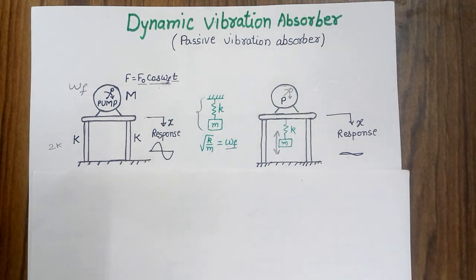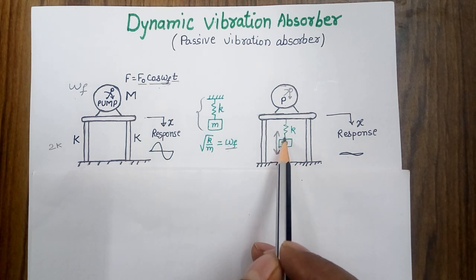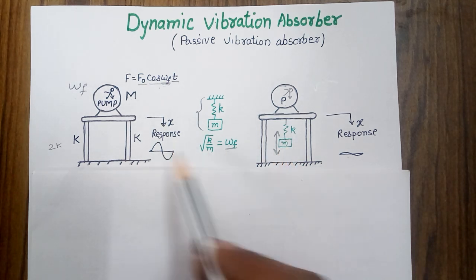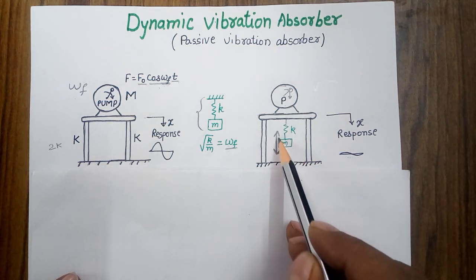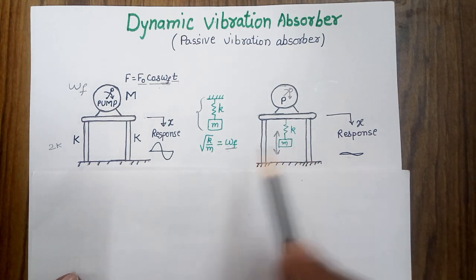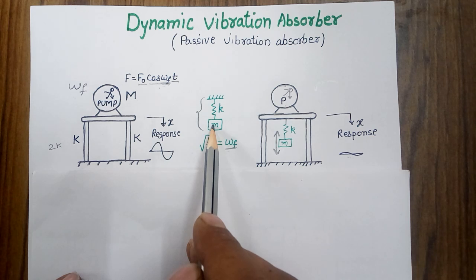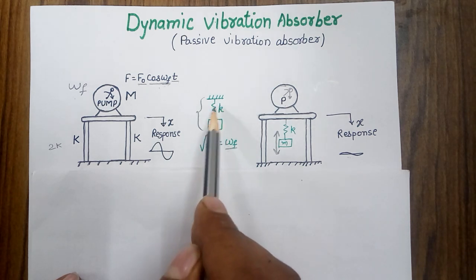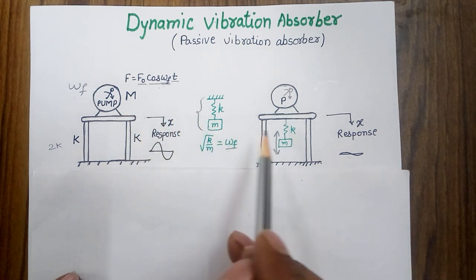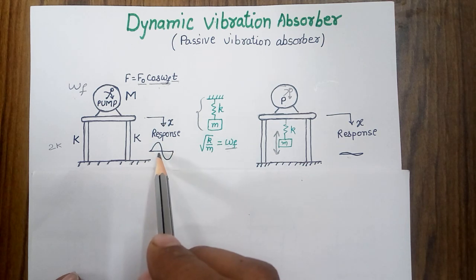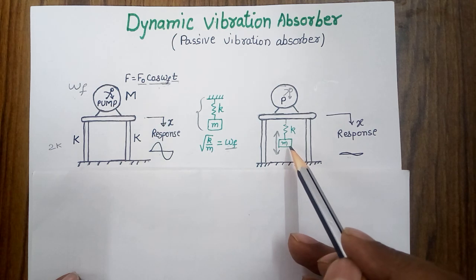When I add this vibration absorber to the main system, I observe that the response is now reduced significantly, and the secondary mass M is vibrating with very large amplitude. The natural frequency of the secondary system matches the excitation frequency, so when the secondary system is added, the primary system vibrates with very small amplitude and the secondary system vibrates with a higher amplitude.